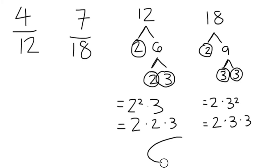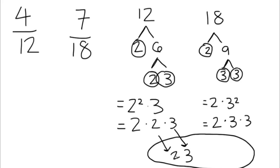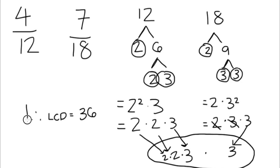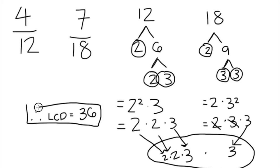Draw a circle as your bubble and insert the prime factors of one of your denominators. Find the common factors between the numbers and cross them out. Now insert the last prime factors that don't have a pair in the bubble with the other factors. Multiply all the factors to get the LCD. Now you'll have your answer.